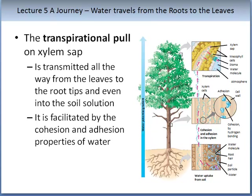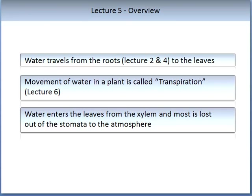Water movement is facilitated by cohesion and adhesion properties of water. In lecture 2, we learnt about how water enters the root system, and in lecture 4, how water travels through the xylem. The movement of this water is called transpiration, and we will learn about this in the next lecture, lecture 6.